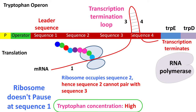Thus, when the concentration of tryptophan in the cell is high, the transcription of tryptophan operon pauses. And the phenomenon by which the loop formation between sequence 3 and 4 pauses the transcription is called transcription attenuation. In other words, transcription attenuation can also be defined as premature termination of transcription.